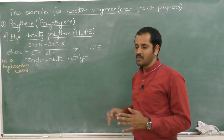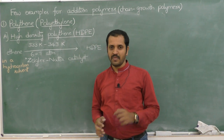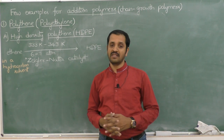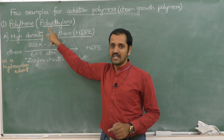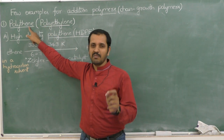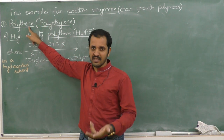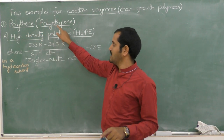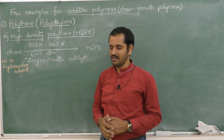One of the well-known examples for addition polymers is polythene, also called as polyethylene. The monomer name is ethylene — the common name is ethylene and the IUPAC name is ethene, giving the polymer name polyethylene or polythene.